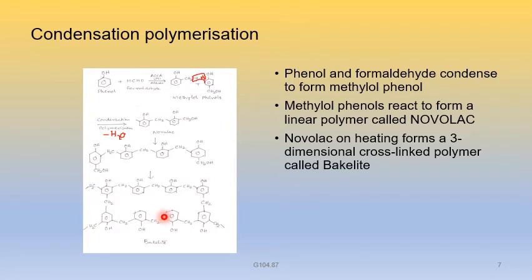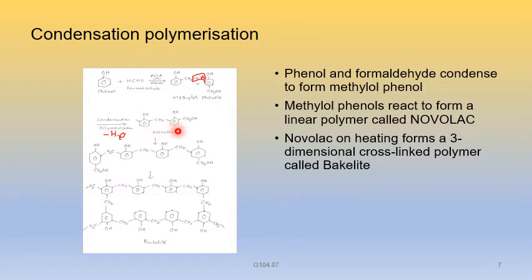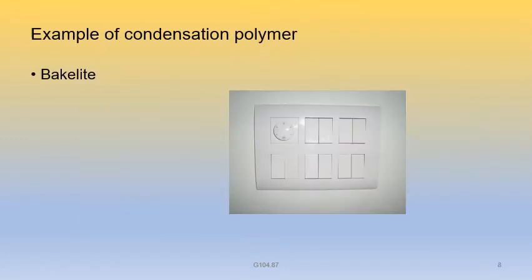Bakelite is another example of condensation polymerization. Generally, we observe in houses that switches are made of bakelite plastic.